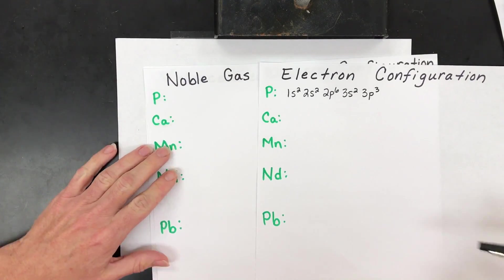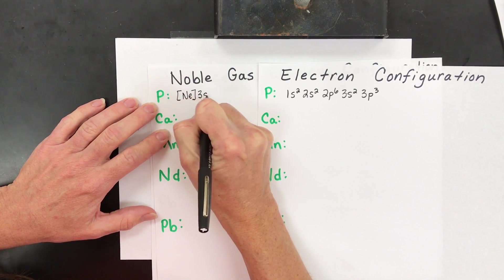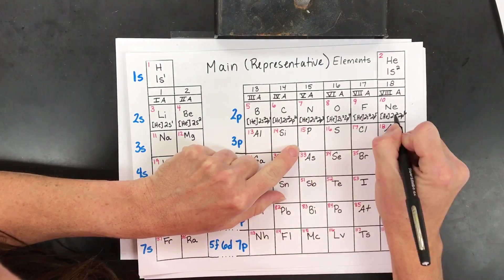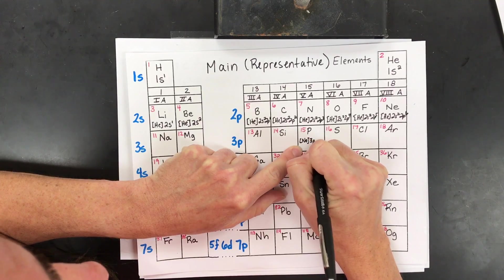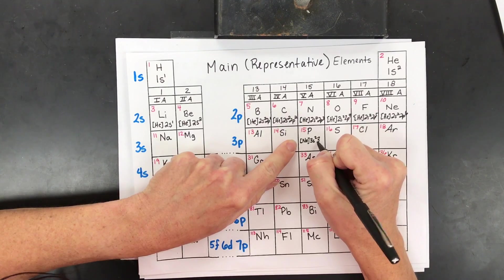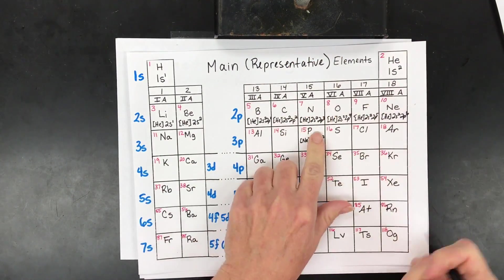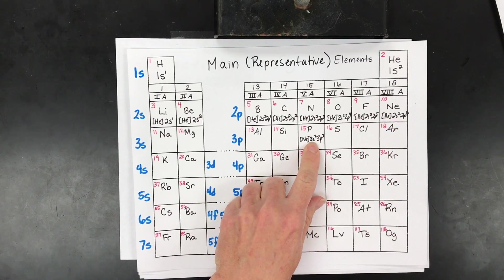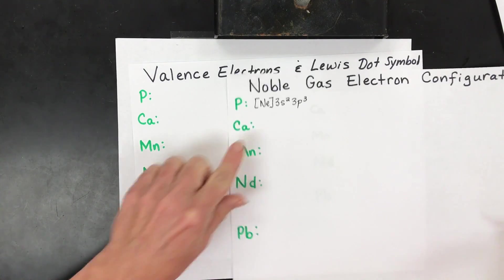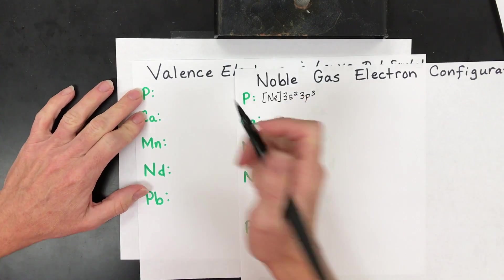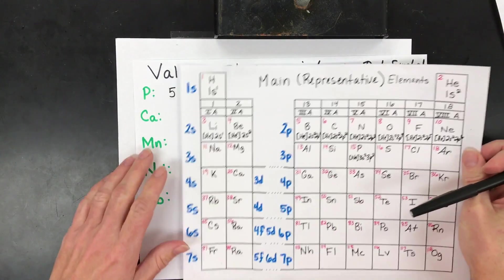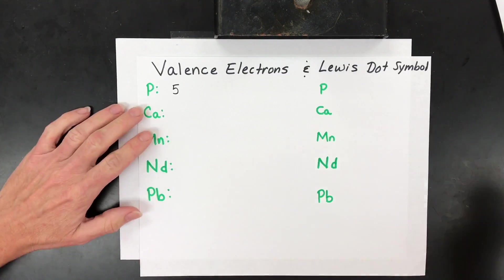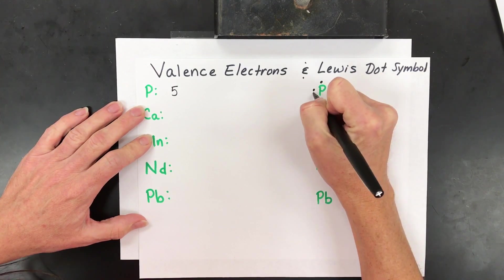The shortened configuration is written as [Ne] 3s² 3p³. On a large periodic table you can note that it passes the noble gas neon, then fills 3s² and 3p³. Valence electrons come from those outer orbitals — two from 3s and three from 3p gives five valence electrons, which corresponds to group 5A (group 15). For the Lewis dot diagram, place four dots first and then pair one side to get five total.